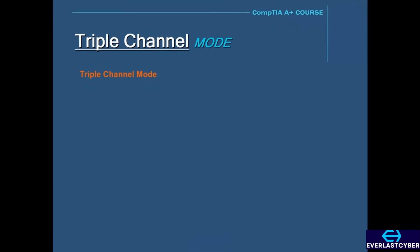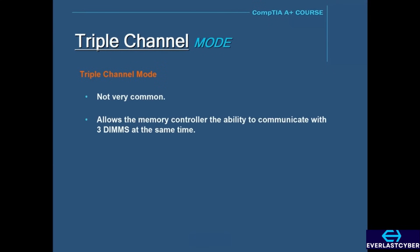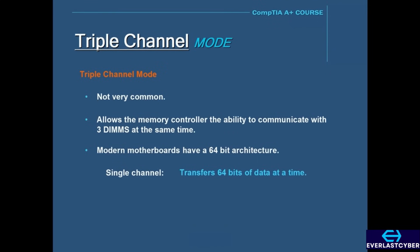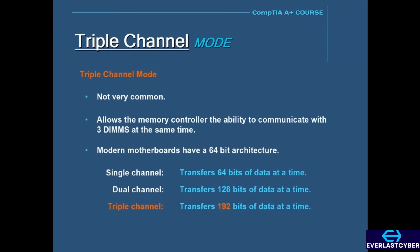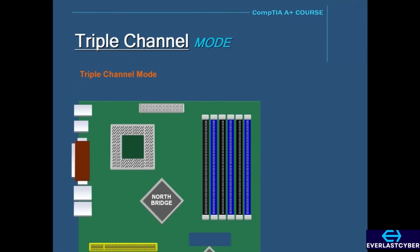There is also Triple Channel Mode. Triple Channel Mode is not very common, and very few motherboards offer this feature. Triple Channel Mode allows the memory controller the ability to communicate with three DIMMs at the same time. In modern computers, motherboards have a 64-bit architecture, so in Single Channel Mode it can transfer 64 bits of data at a time. In Dual Channel Mode, that is doubled to 128 bits at a time, and in Triple Channel Mode it's tripled to 192 bits at a time. Triple Channel Mode is only available on a few motherboards, and only certain Intel Core i7 processors support it.